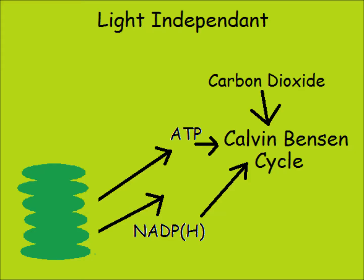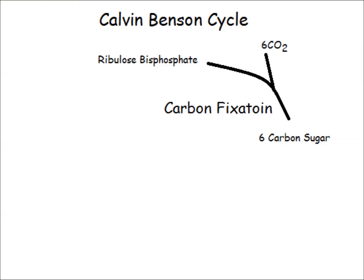The light-independent stage takes place in the stroma. This is the part of the process that requires no light. Carbon dioxide, the hydrogen from the water, and the ATP are all needed for this process to occur. NADP binds with a hydrogen atom and transports it to the stroma. This allows for the Calvin-Benson cycle to occur. The Calvin-Benson cycle uses a five-carbon sugar molecule called ribulose-bisphosphate, which binds to carbon dioxide dissolved in the stroma.